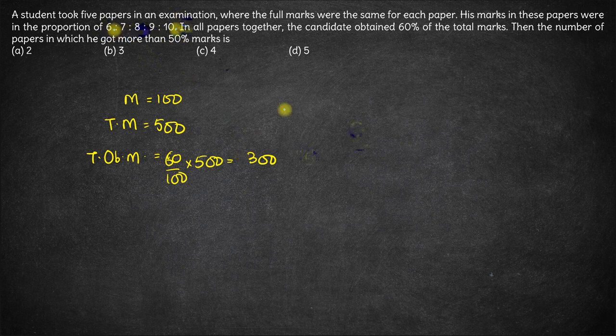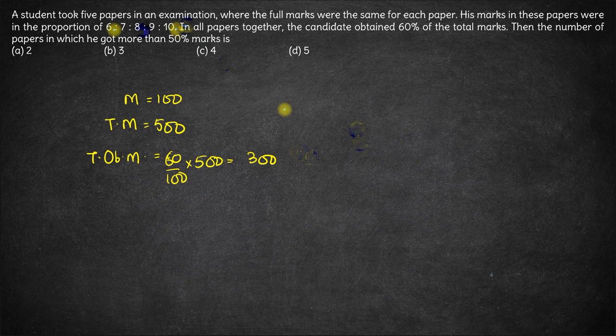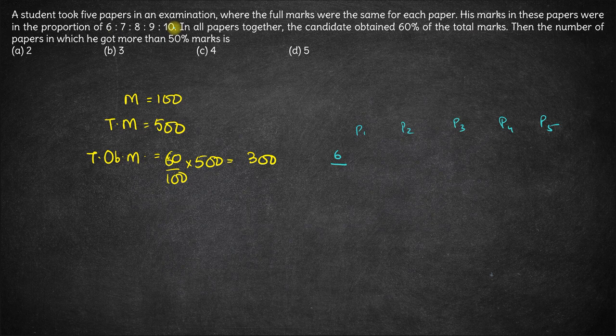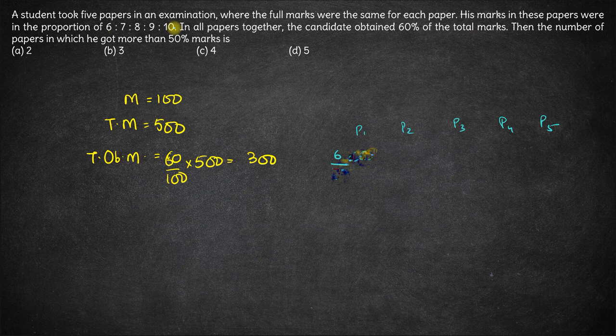So let's say P1, P2, P3, P4 and P5. So in P1 he got 6 parts out of how many? 6 plus 7 plus 8 plus 9 plus 10, which is 40.